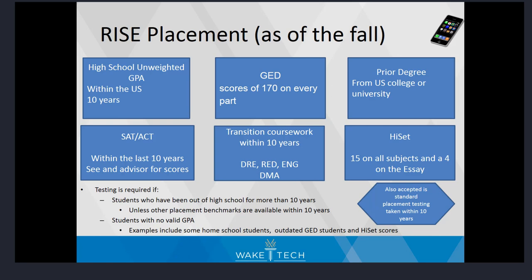There are various ways applicants can be exempt from placement testing. Students who graduated from a U.S. high school in the last 10 years are exempt. Students with SAT or ACT scores within the last 10 years can see an advisor for cutoff scores. Students who scored 170 on all parts of the GED are exempt. Students who completed transition coursework within the last 10 years at a North Carolina community college, or who have a prior degree from a U.S. college or university, are also exempt. Students who scored 15 on all subjects and a 4 on the essay on the high school SAT are exempt, as are standardized placement testing scores taken within the last 10 years at colleges.